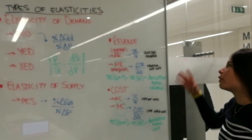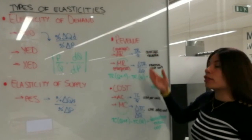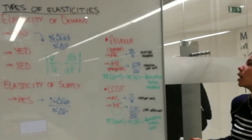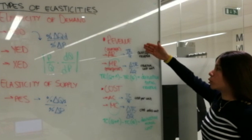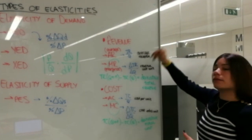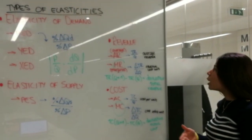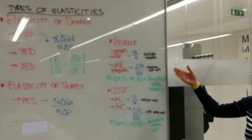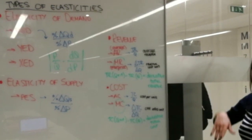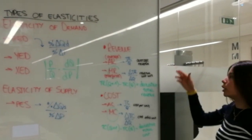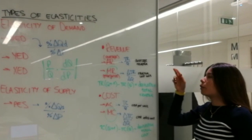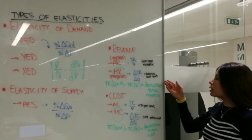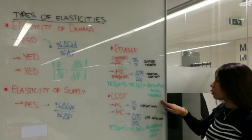Here we have the revenue — both the average revenue and the marginal revenue. The average revenue: we take the total revenue and divide it by the quantity of units produced to get the average revenue. The marginal revenue is the change of the total revenue divided by the change in quantity — we find the derivative of total revenue.